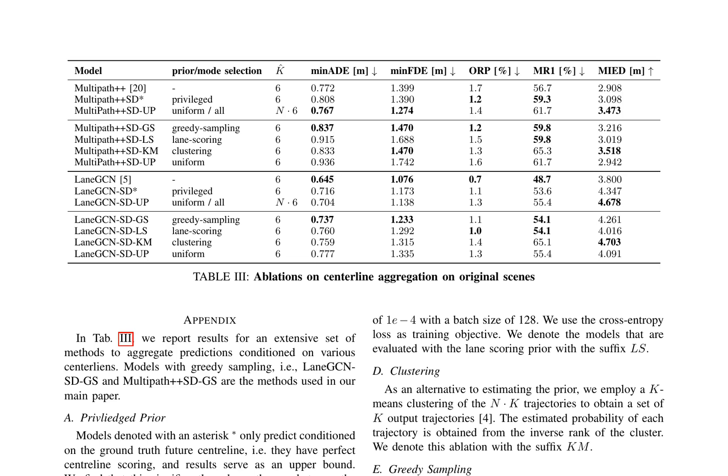The authors conclude that representing the input and output of prediction models in the Frenet frame improves generalization to challenging scenarios by a large margin, reducing predicted off-road probability by over 90% on the scene attack benchmark.